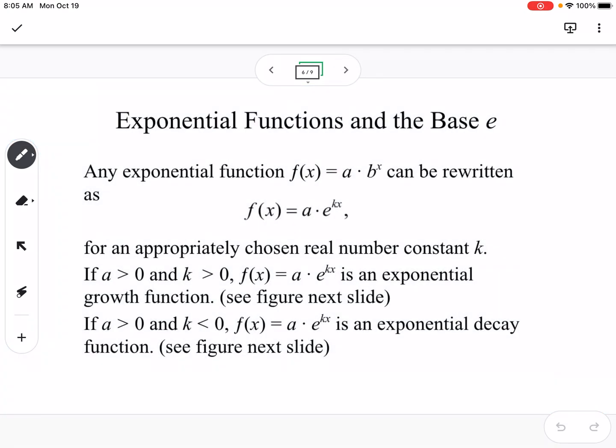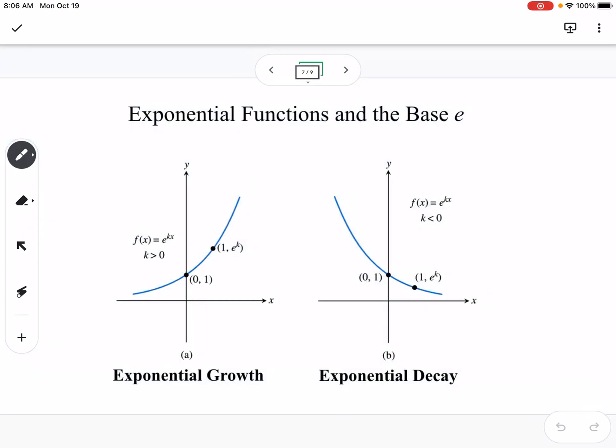So exponential functions. So if we have an exponential function in the form a times b to the x, we can write it, it can be rewritten as f of x equals a times e to the kx. So k is going to be a constant. And then we talk about if a is greater than 0 and k is greater than 0, then it's going to be exponential growth. If a is greater than 0 and k is less than 0, then it's going to be exponential decay. And here is a figure of that. So this is where we have, so assuming a is positive for both of these, if k is greater than 0, we have growth. If k is less than 0, we have decay.